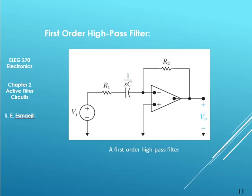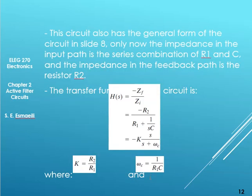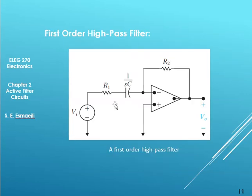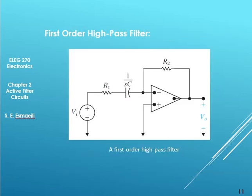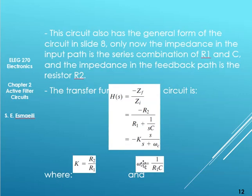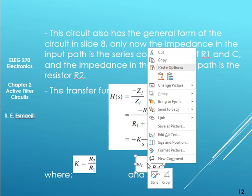And what is the cutoff frequency of the high pass? It's 1 over R1C, which makes sense. Always look at the R which is closer to the capacitor. Over there R2 was close to the capacitor, that's why it was 1 over R2C. Over here the R1 is closer to the capacitor, so it's 1 over R1C.